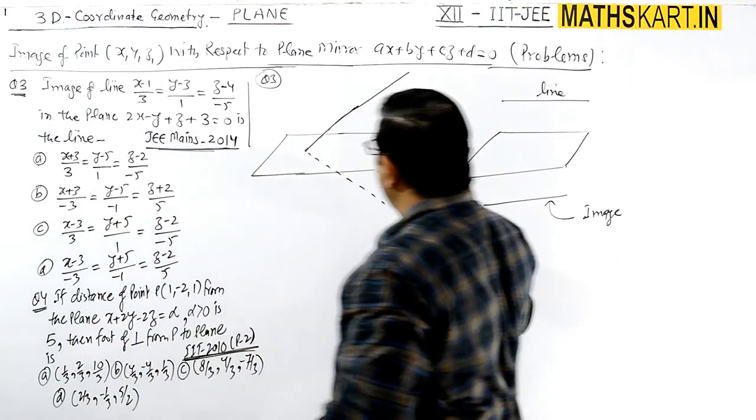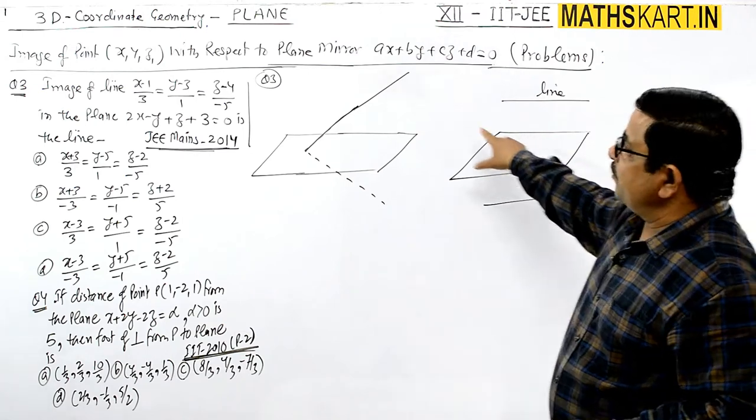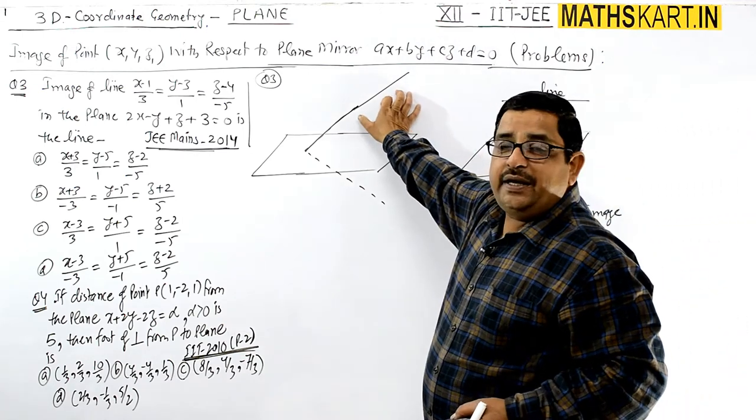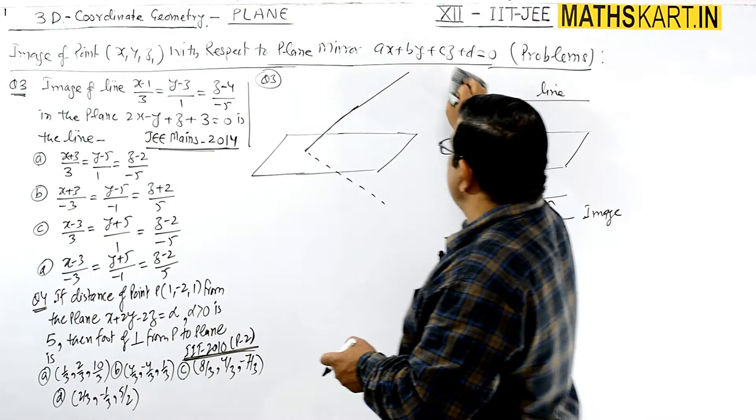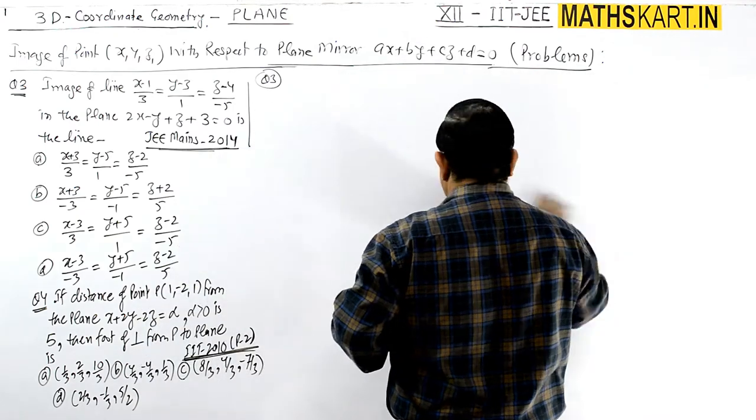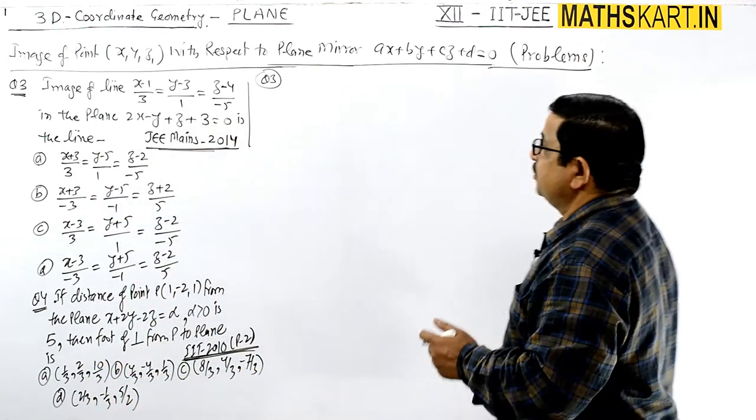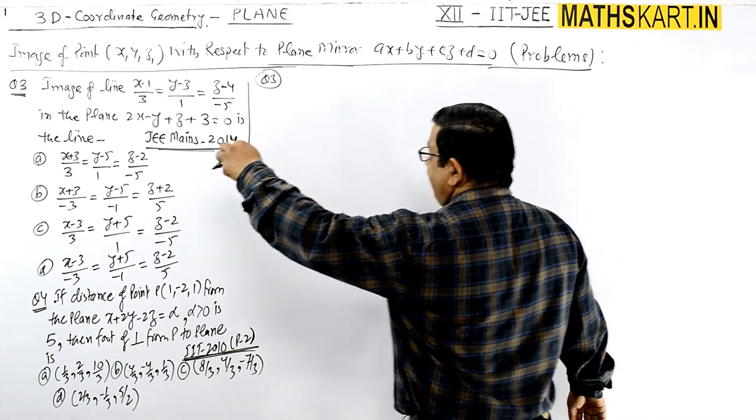First, check what is the line's position against the plane. Is the line parallel to the plane or is it inclined at some angle? To check this, we can verify if the line is parallel.